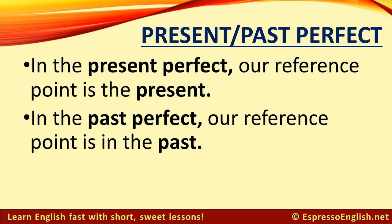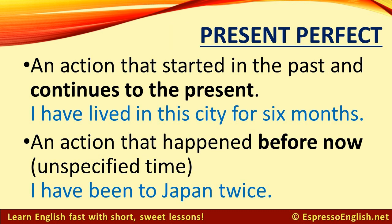Let's look at some examples. We can use the present perfect for an action that started in the past and continues to the present. For example: "I have lived in this city for six months." That means I started living in this city six months ago, and I still live in this city in the present.